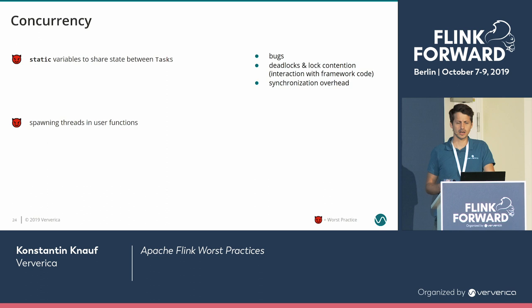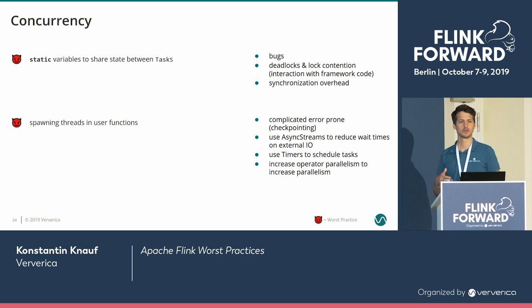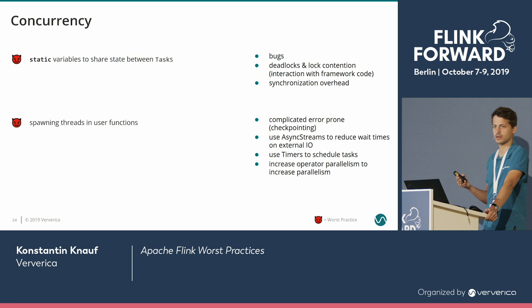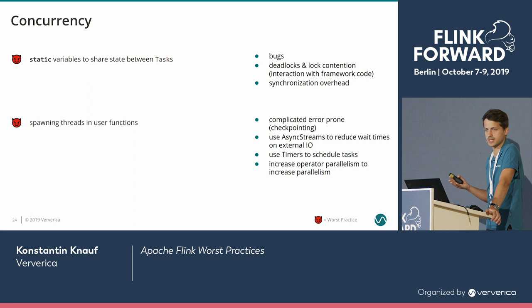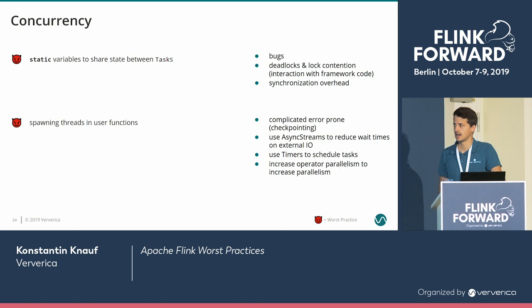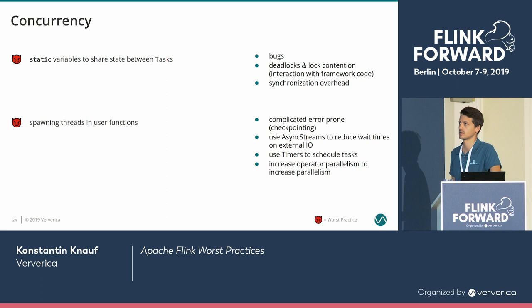The other big anti-pattern is spawning your own threads in user functions — there's usually no need for it, and it leads to bugs. When a user function is invoked, it happens under the checkpointing lock in Flink (or by the mailbox thread in the new model). During that time, no other timers can fire and no checkpointing can happen. If you spawn your own threads and emit records in those threads, you're no longer under the checkpointing lock and lose the consistency guarantees checkpointing would otherwise provide. If you want to reduce wait times while querying external resources, use async I/O. If you want to schedule something in the future, use timers. If you want to increase parallelism, just increase the parallelism via Flink for that particular operator.